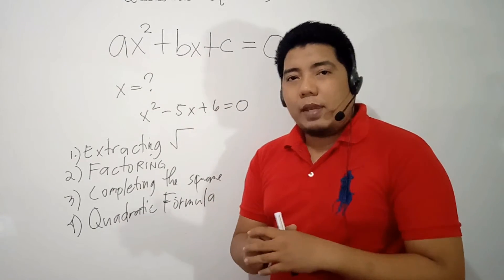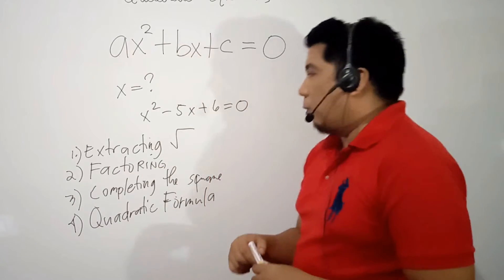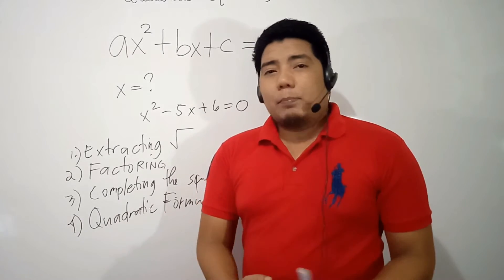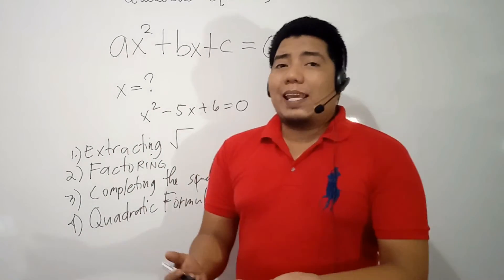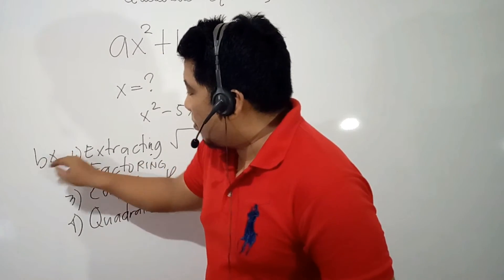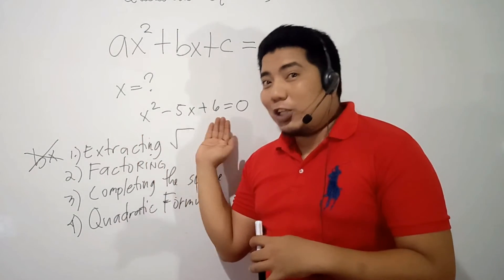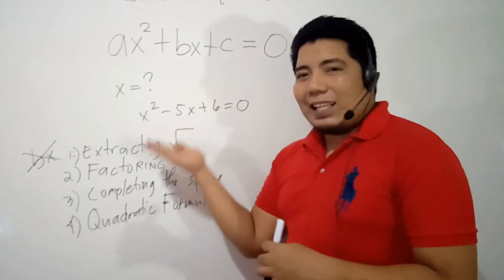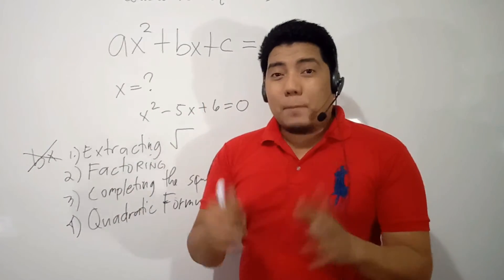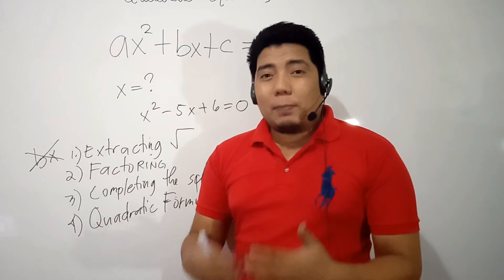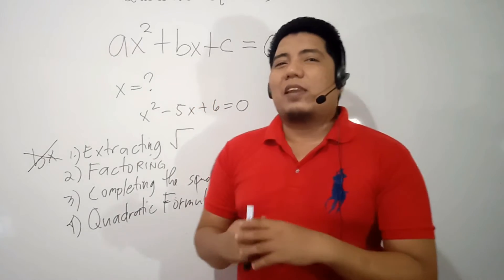These 4 methods each have their own pros and cons. Extracting square root can only be applied if there is no linear term — no bx. Factoring is one of the fastest ways, but it can only be applied if the equation can be factored. If you cannot factor it, you cannot apply this method.